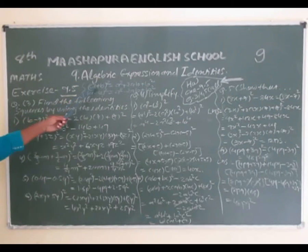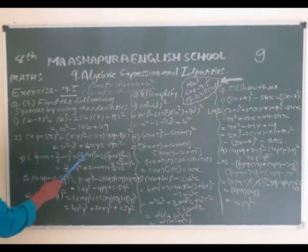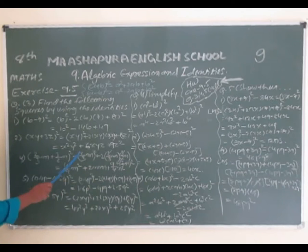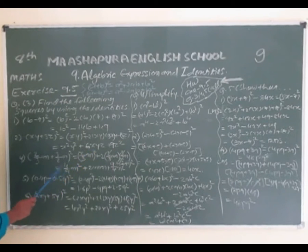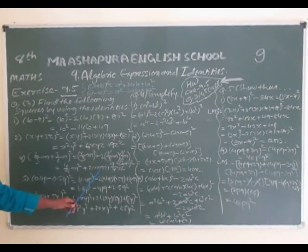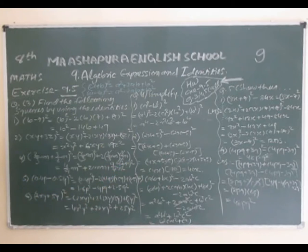Another example using the (a + b)² identity: (2/3m + 3/2n)² = (2/3m)² + 2 × (2/3m) × (3/2n) + (3/2n)². First term squared: 4/9 m². Middle term: 2 × (2/3) × (3/2) = 2, so 2mn. Last term squared: 9/4 n². Finally we get 4/9 m² + 2mn + 9/4 n².